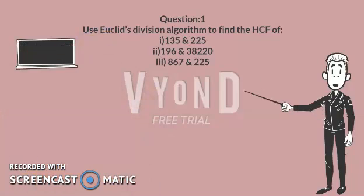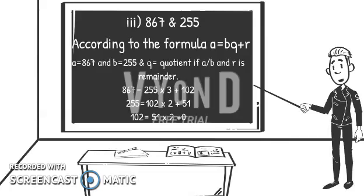The final one before I end the video is as follows: 867 and 255. As spoken before, we have to use the algorithm. Here we take the value of A as 867 and B as 255. The first set arises as 867 equals 255 times 3 plus 102.